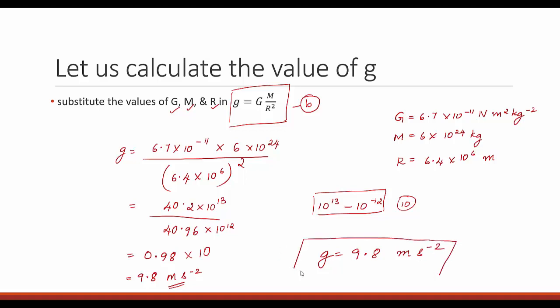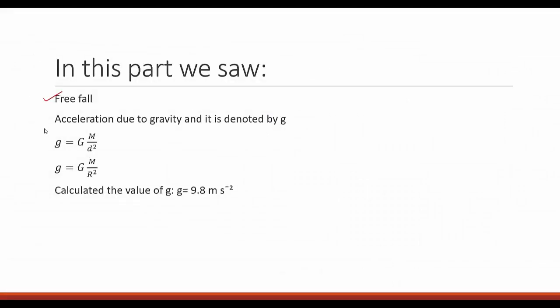So g = 9.8 m/s² is another constant we have, alongside G. To recap this part: we saw what freefall is, we saw acceleration due to gravity denoted by g, we derived Equation A for objects far from earth and Equation B using the earth's radius for objects near or on the surface, and we calculated g = 9.8 m/s². In case you have any doubts, please write back to us.